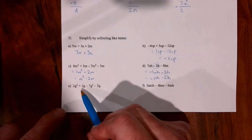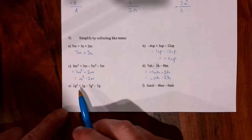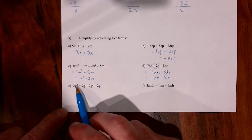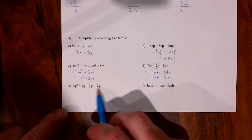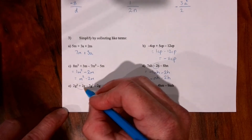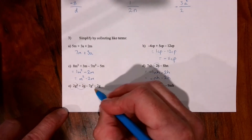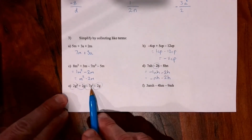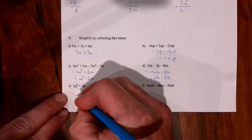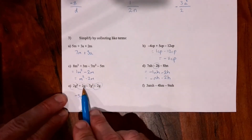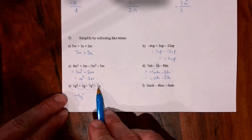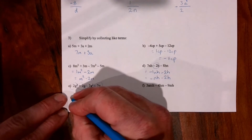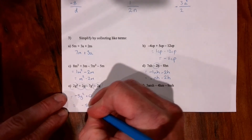Question 3e is similar to 3c: we have g squareds and g's, which can't be collected together. But the g squareds can be collected together and the g's can be collected together — remembering the symbol in front goes with the term. We have 2g squared take away 7g squared giving negative 5g squared. Then we have 2g and take away 2g — they cancel completely, leaving nothing. So the answer is just negative 5g squared.